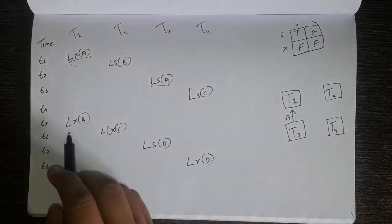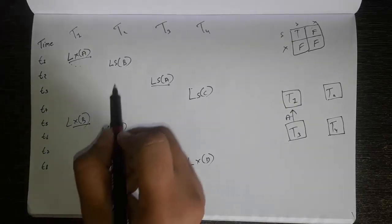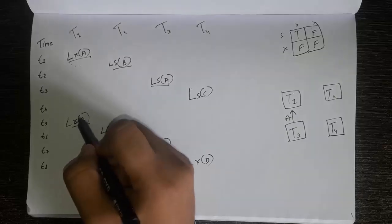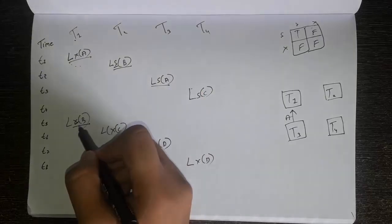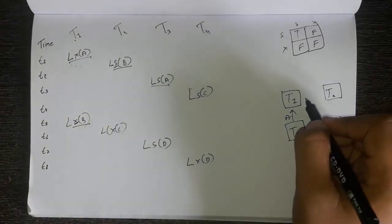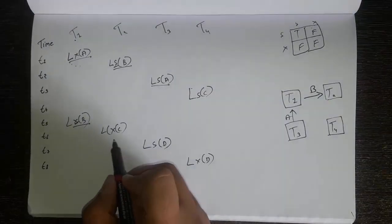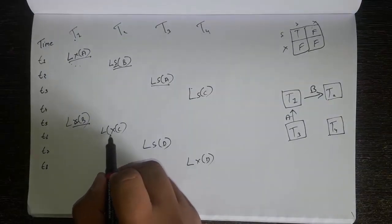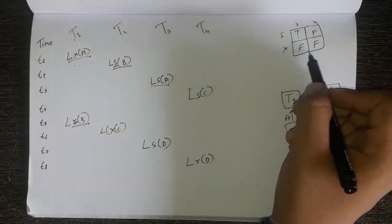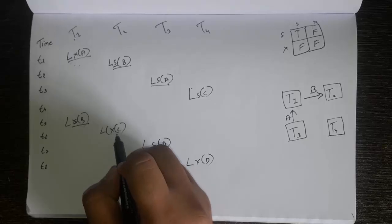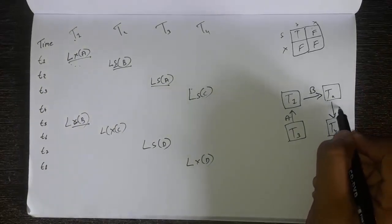Moving to T5, which is Lock-X(B) for transaction T1. We can see there is an L-S(B) for transaction T2 earlier. X and S are incompatible, so T1 is blocking T2 — T1 is blocking T2 on resource B. Then we move to T6, which is Lock-X(C) for transaction T2. There is an L-S(C) from T4. X and S is false again, so T2 is blocking T4 on resource C.